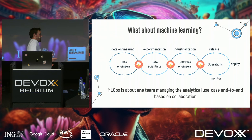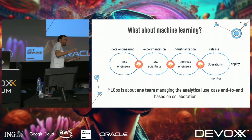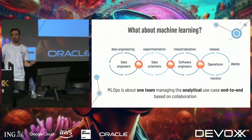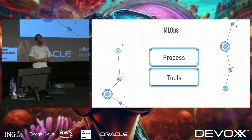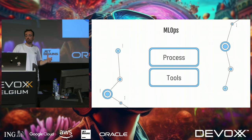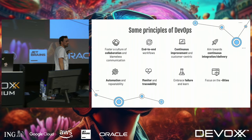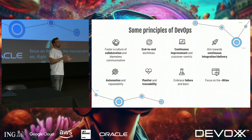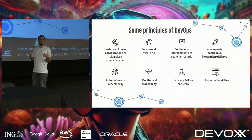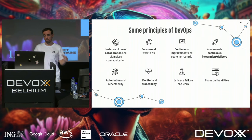What is MLOps? It's about making one team responsible end-to-end for analytical use cases based on collaboration. MLOps is about the process, a set of principles, supported by a set of tools. The principles of DevOps — things like continuous integration and delivery, focus on qualities like maintainability, availability, reliability — actually apply exactly the same to MLOps.